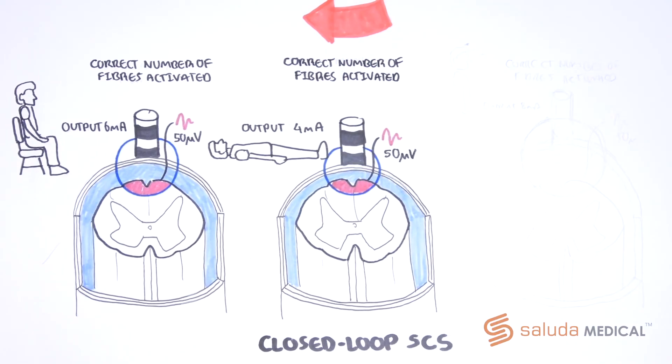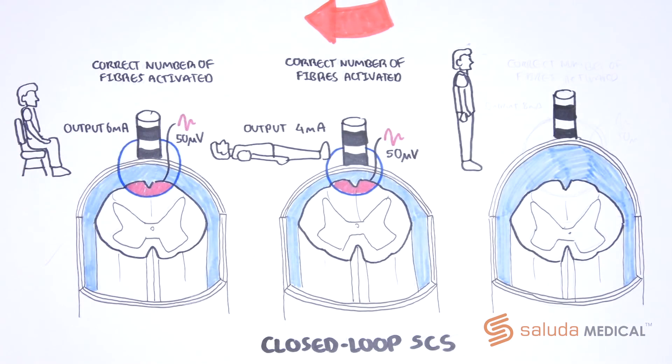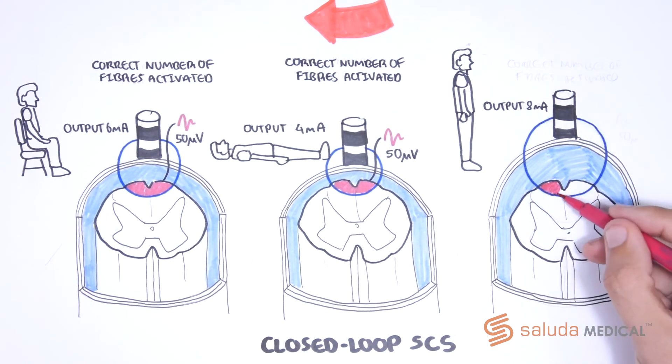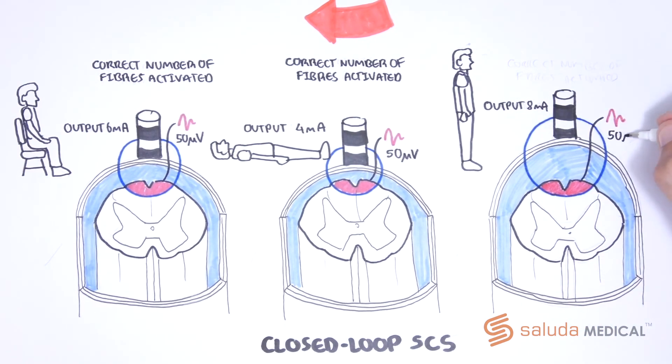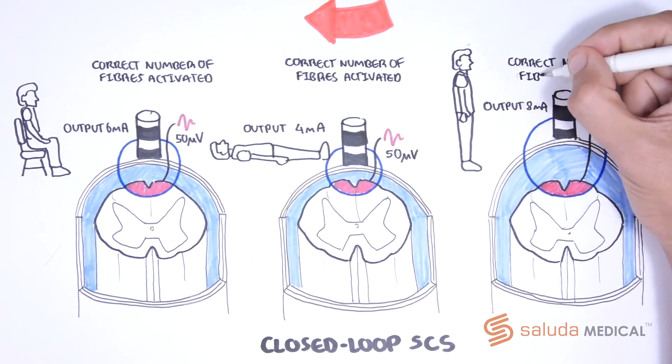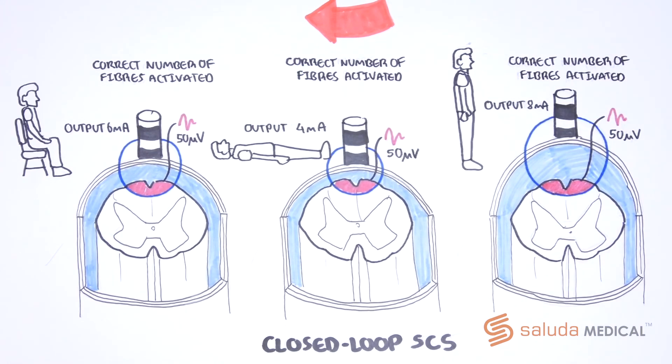The same is true if the lead moves away from the spinal cord, which in our example occurs when the patient stands, and the stimulus output is instead increased in order to maintain the desired activation with a more consistent activating region.